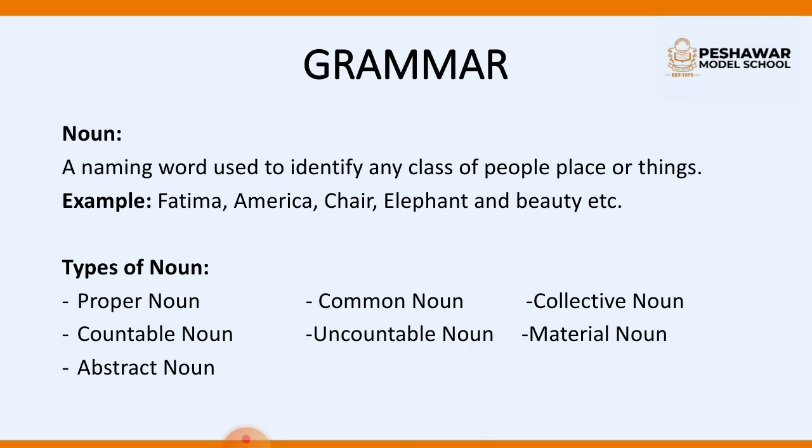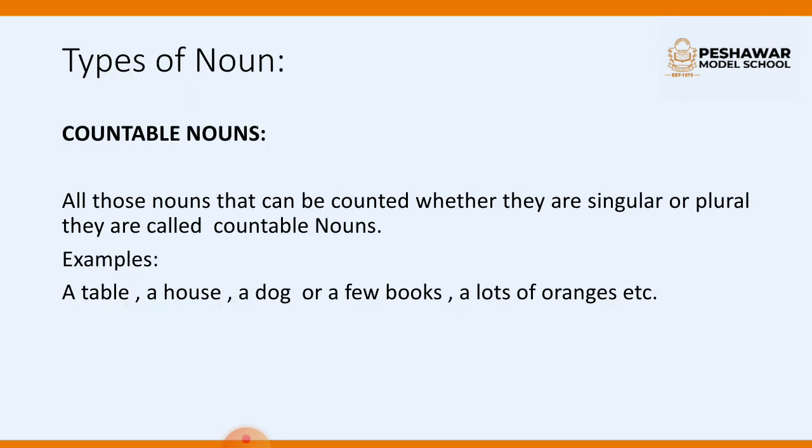Types of nouns are: proper noun, common noun, collective noun, countable, uncountable, material, and abstract nouns. Today we are going to discuss countable nouns. Countable nouns — as the name shows — are all those nouns that can be counted, whether they are singular or plural. Examples: a table, a house, a dog, a few books, lots of oranges. Countable nouns are things that we can count — for example, pen: one, two, three or more pens.